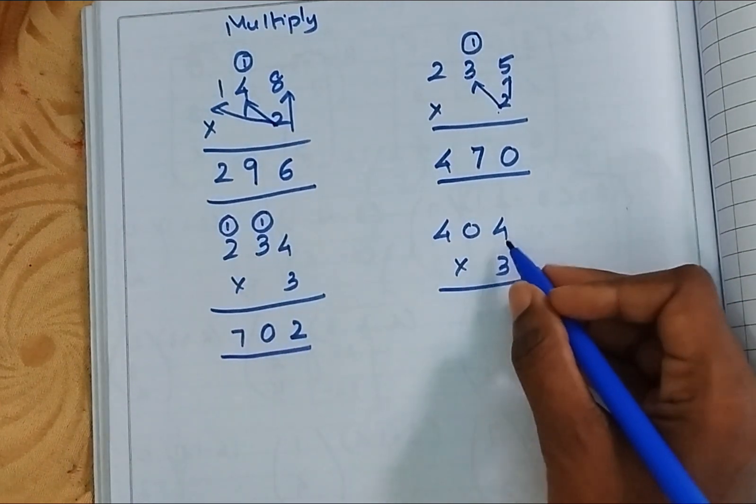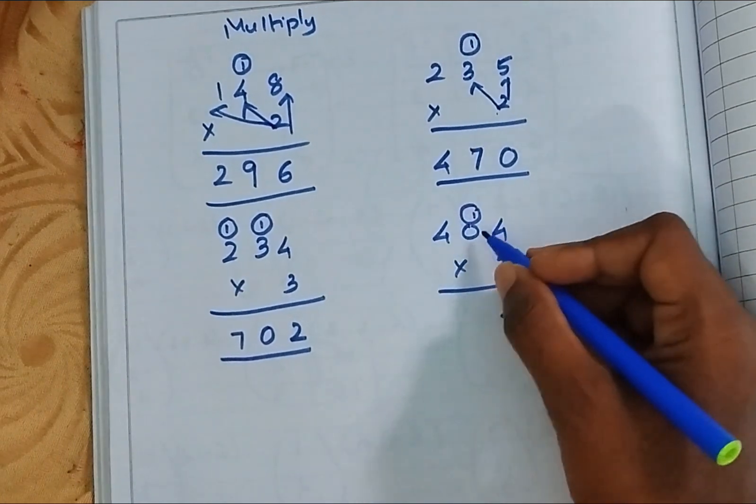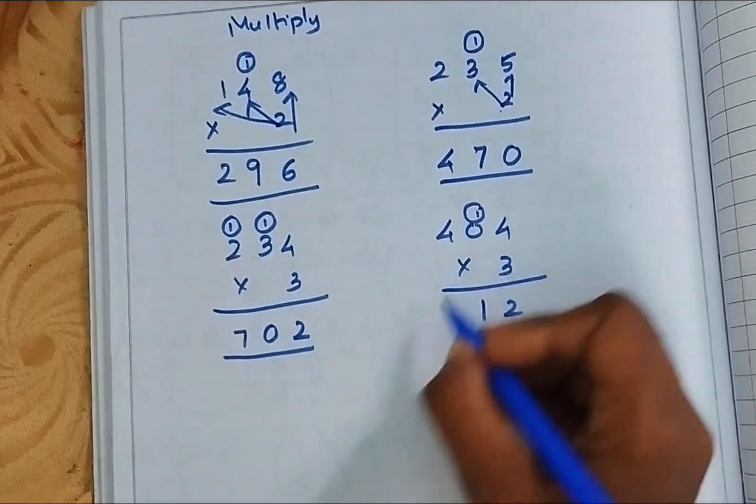3 times 4 is 12. 3 times 0 is 0, 0 plus 1 is 1. 3 times 4 is 12.